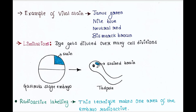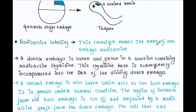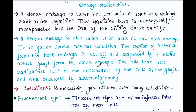The next process is radioactive labeling. This technique makes one area of the embryo radioactive. A donor embryo is taken and grown in a solution containing radioactive thymidine, which is subsequently incorporated into the DNA of the dividing donor embryo. A second embryo is taken as the host embryo, grown under normal conditions. The region of interest from the host embryo is cut off and replaced by a radioactive graft from the donor embryo. The radioactive cells — descendants of the graft cells — are observed by autoradiography.